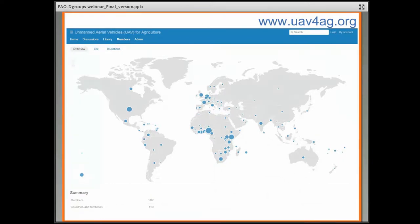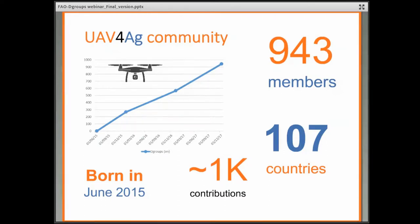It is a Wikipedia-like platform with individual curators of national pages. With members from more than 100 countries on the dGroups, we were able to mobilize the whole community to contribute information about national legislation. We are close to 1,000 members now, covering around 100 countries, with about 1,000 contributions, and the community has been growing very fast. We also have equivalent communities on Twitter and Facebook, but dGroups is where the most serious, intensive, and technical discussions happen — including legal aspects — while Facebook is just for sharing activities and Twitter serves as a news bulletin.